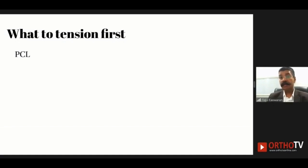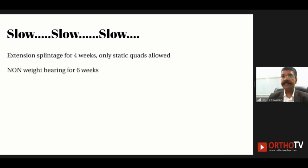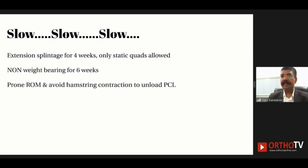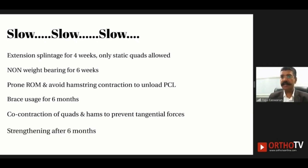When all four ligaments are torn, I prefer to tension the PCL first, then the ACL, then the lateral side, and finally the medial side. Rehabilitation proceeds slowly: I splint in extension for 4 weeks, non-weight-bearing for 6 weeks, and use prone range-of-motion exercises — except when a dynamic PCL brace is used, in which case supine range of motion is allowed. I advise patients to use the brace for at least 6 months, and recommend co-contraction of quadriceps and hamstrings to prevent shear stresses across the repair.